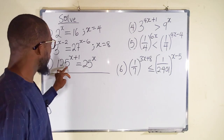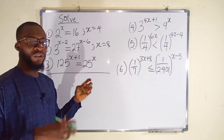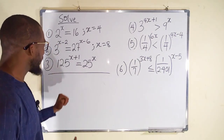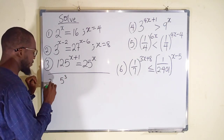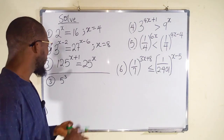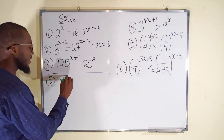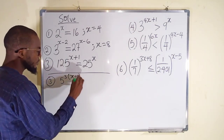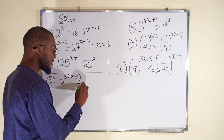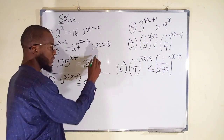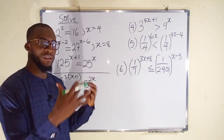For the last equation, we have 125 to the power of (x plus 1) and to the right we have 25 to the power of x. 125 can be written as 5^3, because 5 times 5 is 25, and 25 times 5 is 125. We still have another power (x plus 1). The right side, 25, can be written as 5^2, with another power x. Now we have common bases, so we can equate the powers.